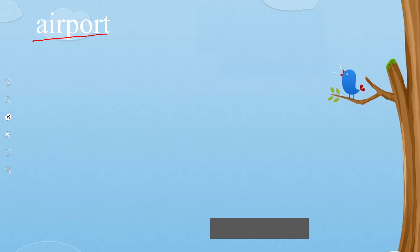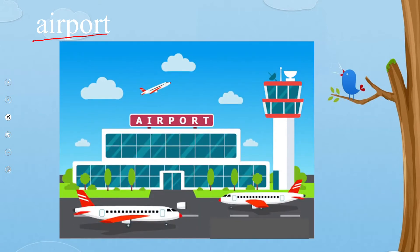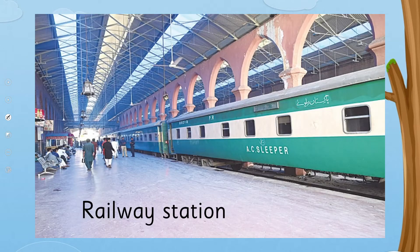For example, 'airport' — it's a noun and it refers to a place. When we want to fly in an airplane, we take a ticket and we go to the airport. Airport is a noun for place. Railway station is also a noun for place, where we take a train to travel.